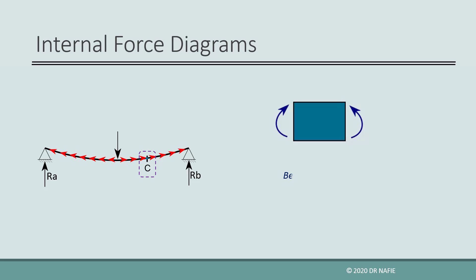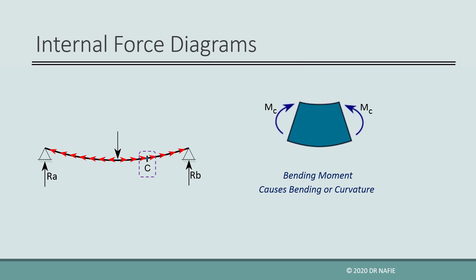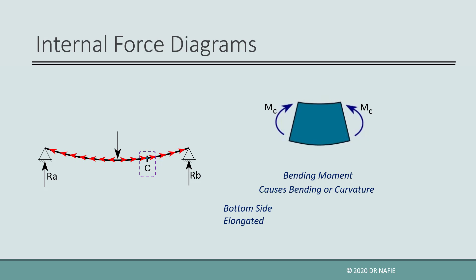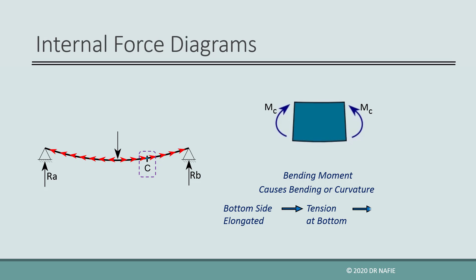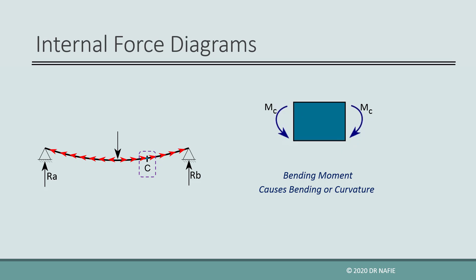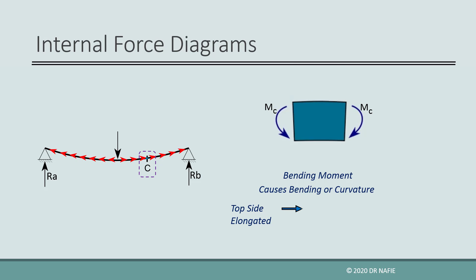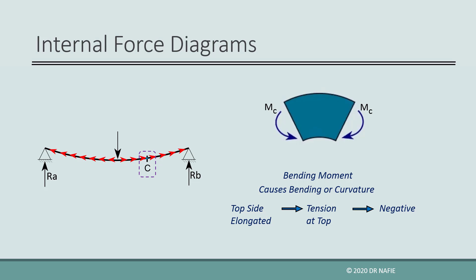The last internal action is the moment M. This moment causes the beam to bend, so it is called a bending moment. If the tail of the moment arrow is at the bottom, then the bottom side of the curved beam will be elongated and the bottom of the beam will be in tension. The bending moment in this case is considered positive. If the moment is reversed, the tail of the arrow will be at the top and the bottom side will be in compression, and in this case the moment is negative.